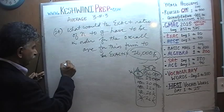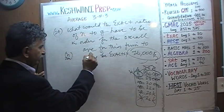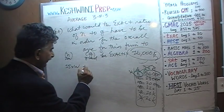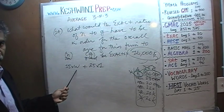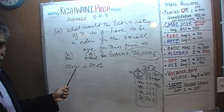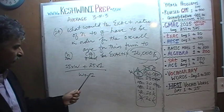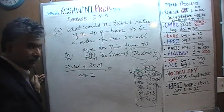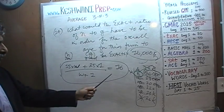Let's set up the equation. Let W represent the number of non-graduates for every one graduate. Non-graduates earn an average of $15,000 and we have W of them; the one graduate earns an average of $25,000. So we have W + 1 total workers. We need to find W such that the weighted average equals $16,000. The equation is: (15W + 25) ÷ (W + 1) = 16.